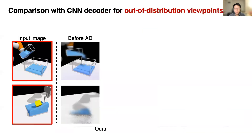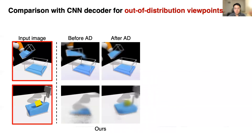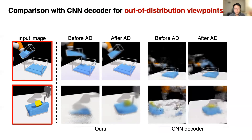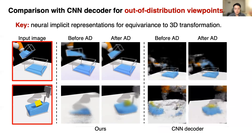After auto-decoding test-time optimization (denoted AD), the resulting S_T is much better at describing the underlying contents, as evidenced by the decoded image. Here are more results from our model after AD: the rendered images are closer to the input images captured from out-of-distribution viewpoints. We compare our method with an alternative using a CNN decoder, which produces much worse results. The key to our success is the use of neural implicit representations combined with a differentiable volumetric renderer, which injects the desired inductive bias allowing the model to be equivariant to 3D transformations.